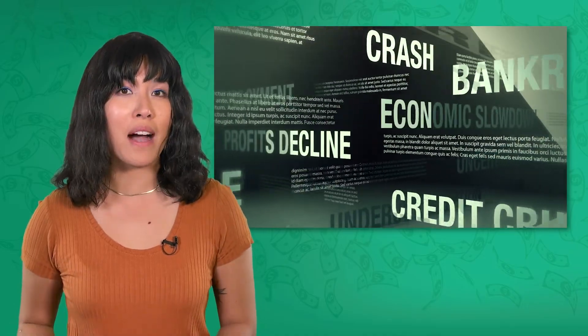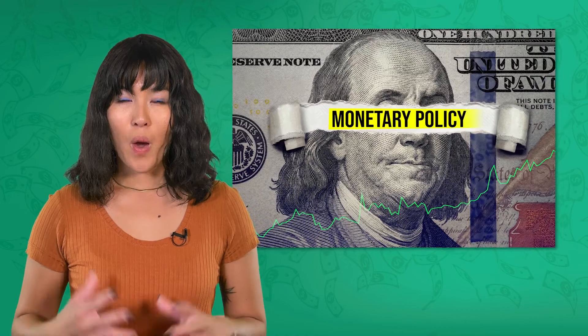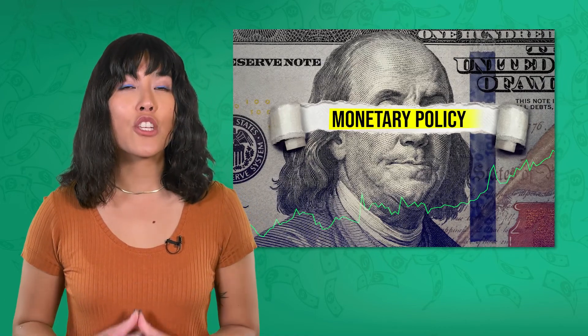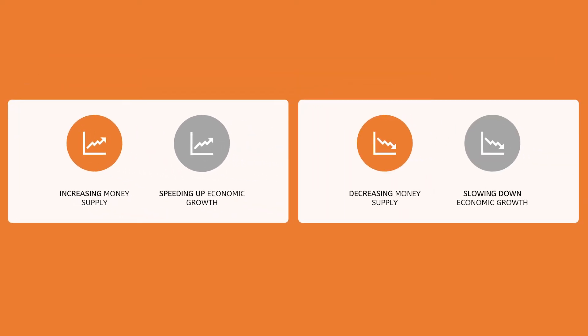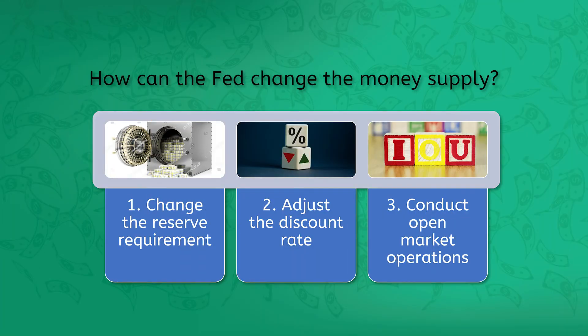In the US, the Federal Reserve helps create and maintain a stable economy by regulating the banking system and providing for the secure and efficient movement of money. But sometimes the economy gets too far out of balance and requires further intervention. Whether speeding up or slowing down, the Federal Reserve can use monetary policy — more money in circulation can spur growth, while less can slow things down to avoid overheating. To achieve either goal, the Fed can change reserve requirements, adjust interest rates, and buy or sell government securities.